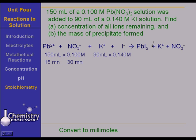Now, let's look at the potassium iodide. We have 90 milliliters times 0.140 molar. Well, multiplying that out, we find that we have 12.6 millimoles of potassium, but it's KI is the formula. So, we also have 12.6 millimoles of iodide ion.